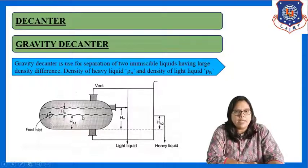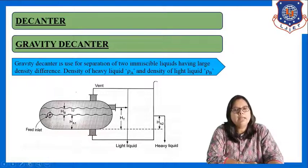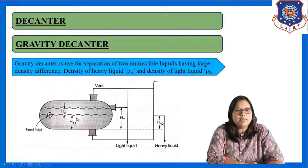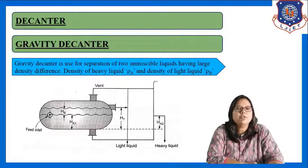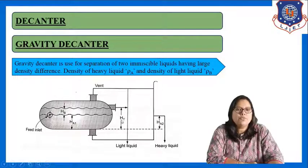The density of the heavy liquid will be rho A and the density of the light liquid will be rho B. In the notation, HB is the height of the light liquid and HA1 is the height of the heavy liquid. After some time, two layers will be formed in the decanter because of the density difference. After that we can remove both liquids. This is the overflow line of the light liquid, and HT is the height of the heavy liquid.